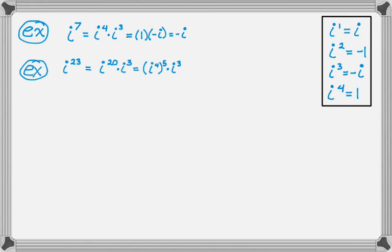This simplifies down because i to the fourth is 1, so it's 1 to the fifth times negative i — because i cubed is negative i. And this is just negative i.